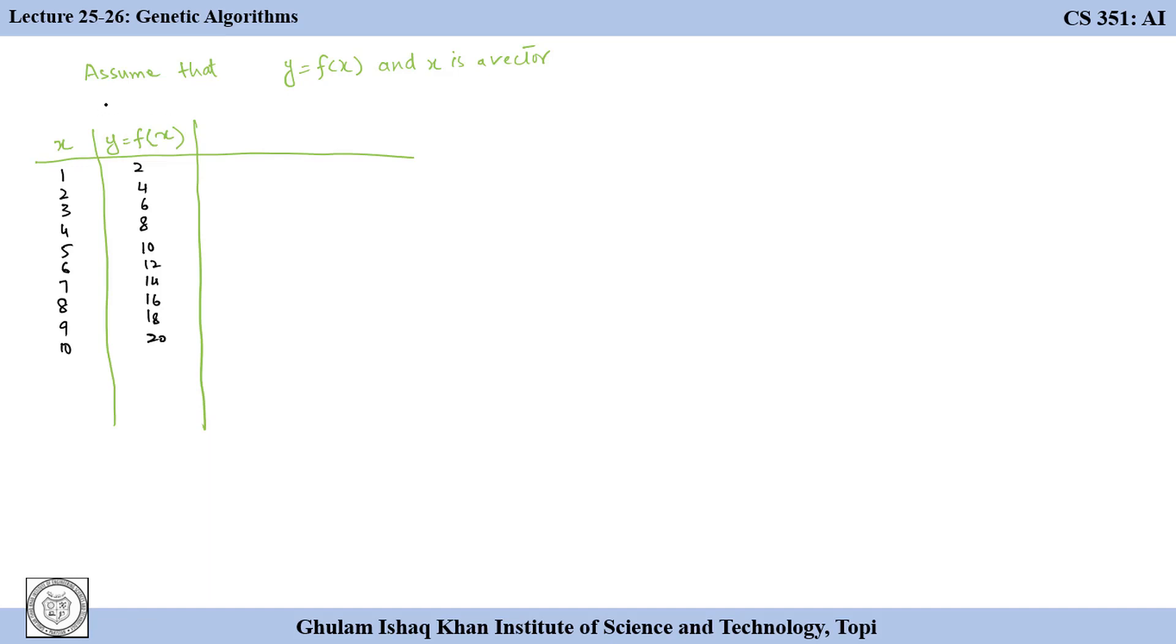Moreover assume that we are told that f of x is theta 0 plus theta 1 times x and it is our job to find theta 0 and theta 1. Now how can we do that? Well, a simple way is to have random guesses about theta 0 and theta 1.